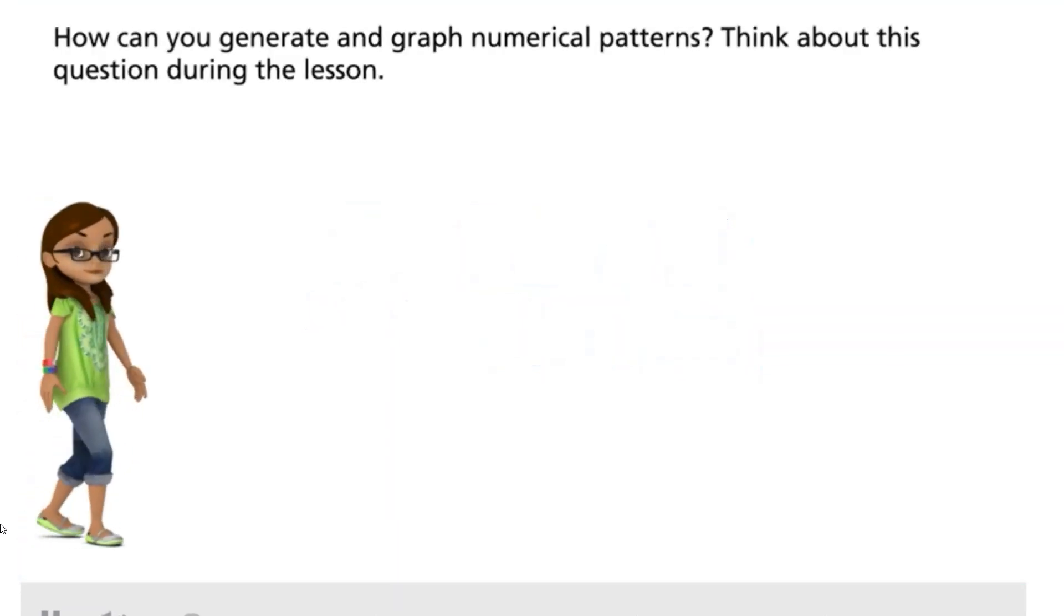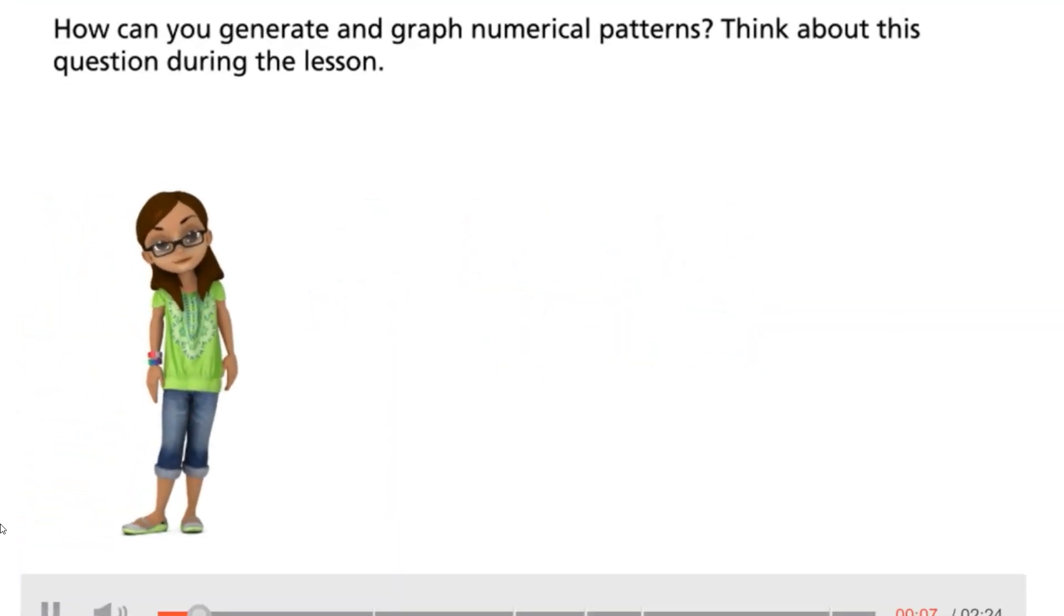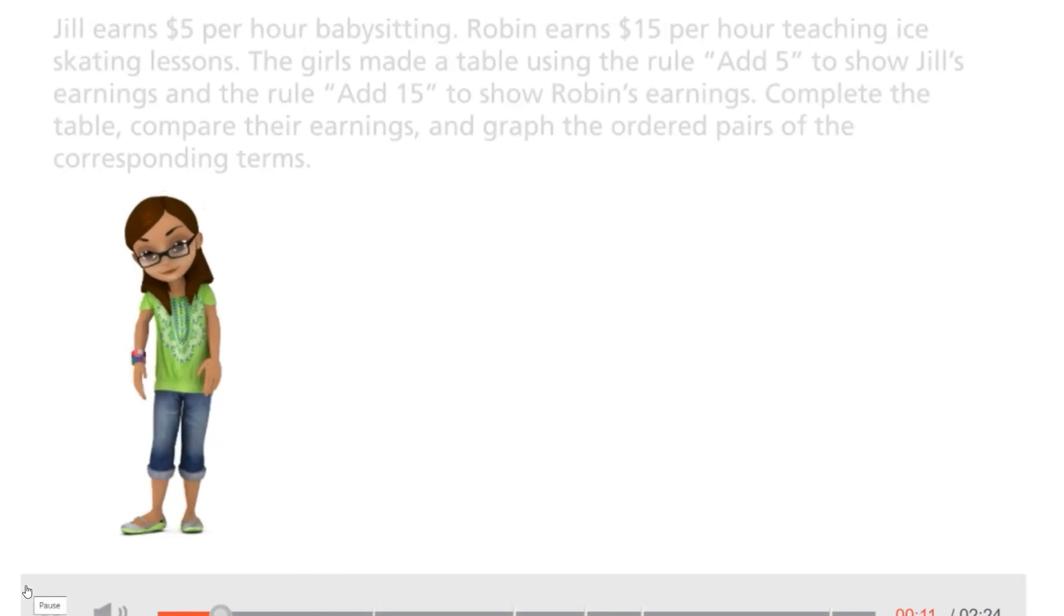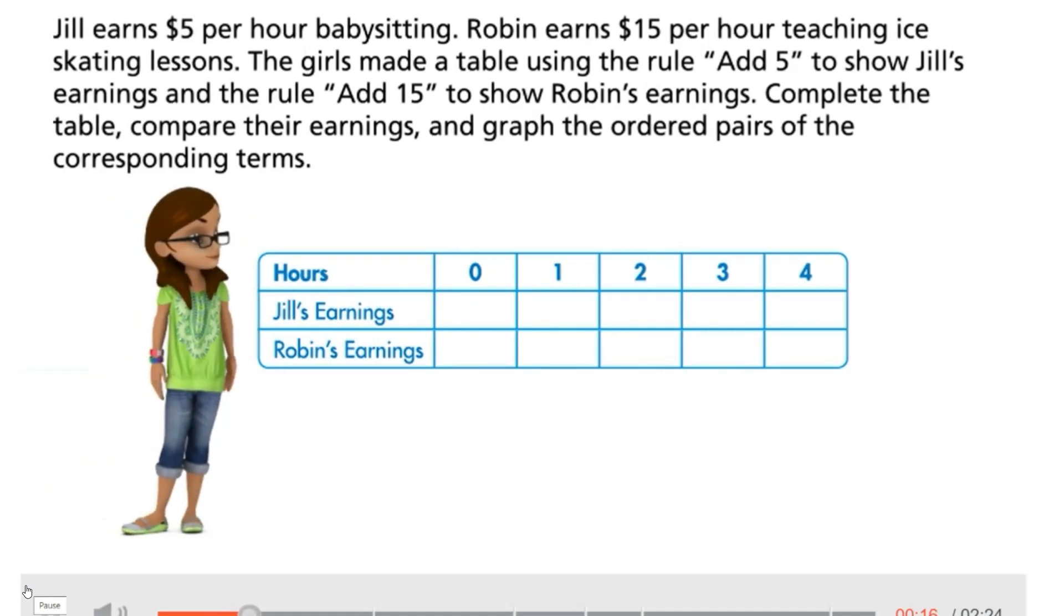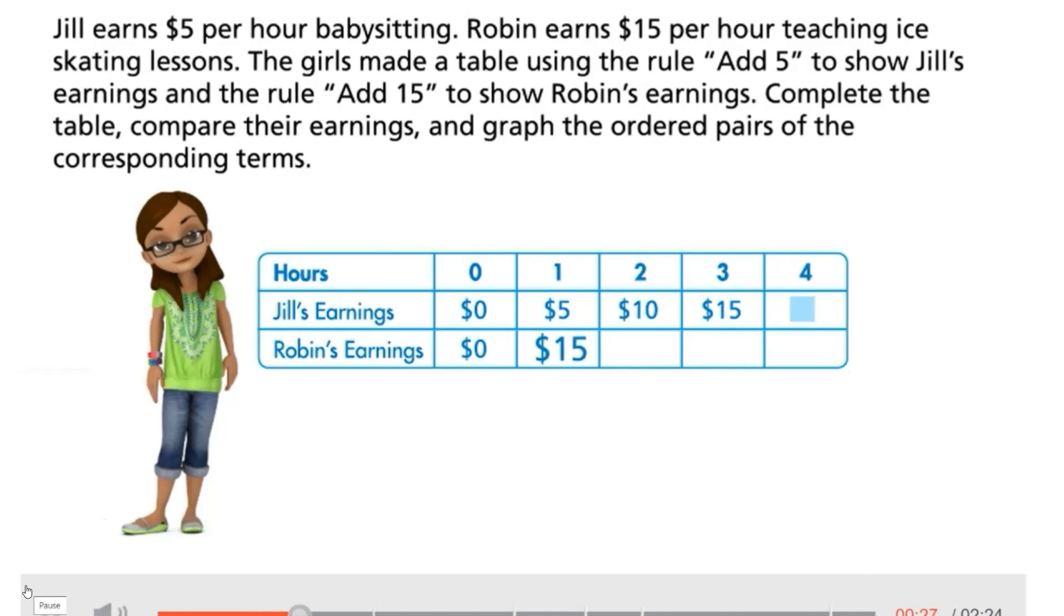How can you generate and graph numerical patterns? Think about this question during the lesson. Jill earns five dollars per hour babysitting. Robin earns fifteen dollars per hour teaching ice skating lessons. The girls made a table using the rule add five to show Jill's earnings and the rule add fifteen to show Robin's earnings. Complete the table, compare their earnings, and graph the ordered pairs of the corresponding terms.